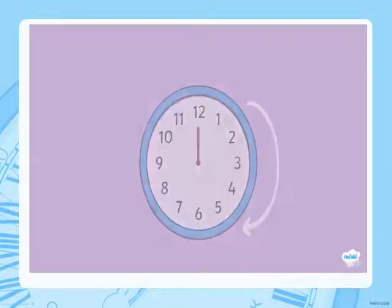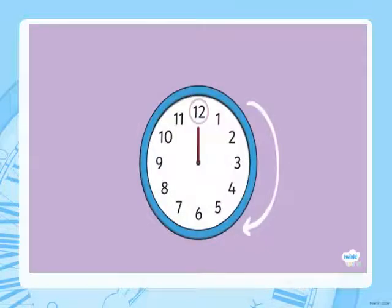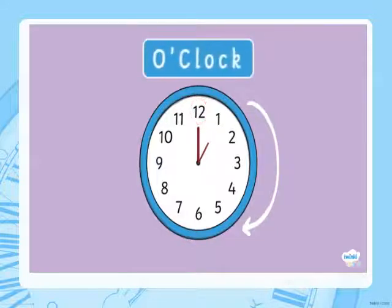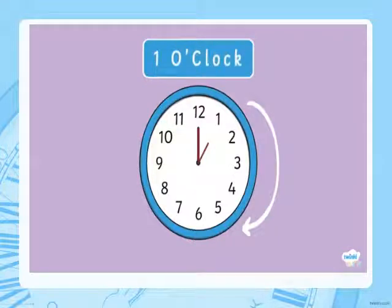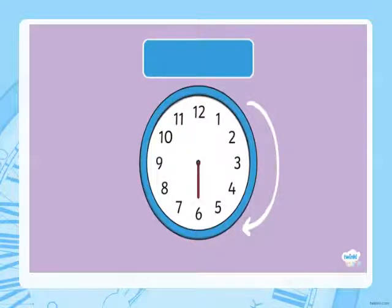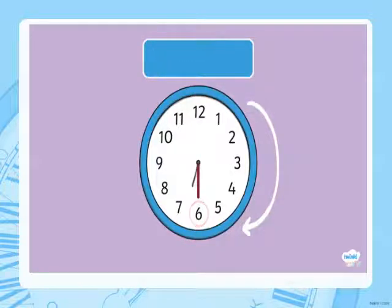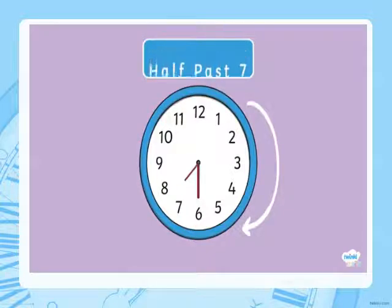When the longer hand, the minute hand, is pointing to the number 12, and the smaller hand, the hour hand, is pointing to one of the hour numbers, we call this o'clock. For example, when the minute hand points to 12 and the hour hand points to 1, we say it's 1 o'clock. But when the minute hand gets to the number 6, then we say half past. When the minute hand points to 6 and the hour hand points to 7, we say the time is half past 7.